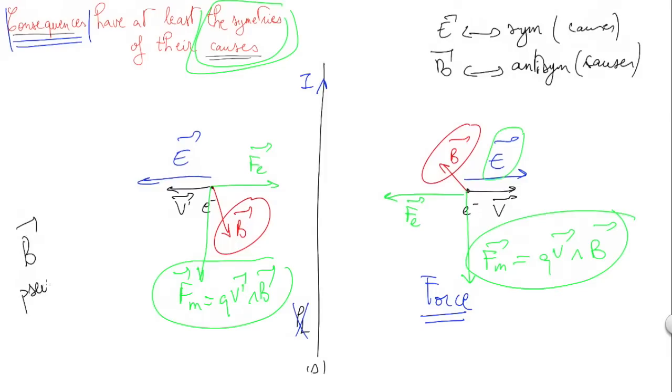Why? Because B is what we call a pseudo-vector. The mathematical construction of the magnetic field depends on space orientation, while the electric field is intrinsically built without any dependence on space orientation.